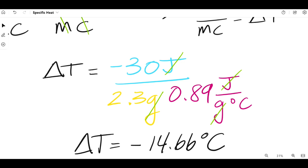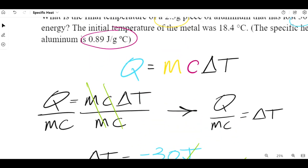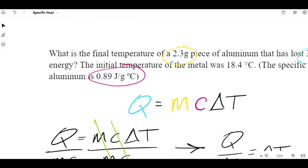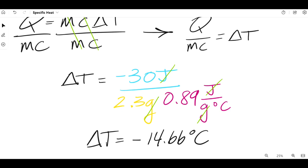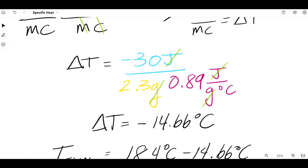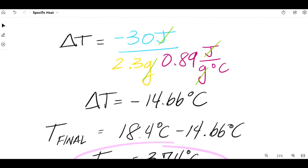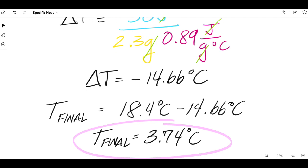Now, many, many times once we get to this point, we kind of lose sight of what the original question asked. And remember, it didn't ask for the delta T. The question asked us to solve for the final temperature. So, we can't stop here. If we just submit our answer as delta T is equal to negative 14.66 degrees Celsius, we're most certainly going to get it wrong. In order to get the final temperature, we're going to take our initial temperature, which was 18.4 degrees Celsius that was given to us in the question, and the delta T is a loss of 14.66 degrees. So, we're going to subtract that from the 18.4. And this tells us that the final temperature is 3.74 degrees Celsius.